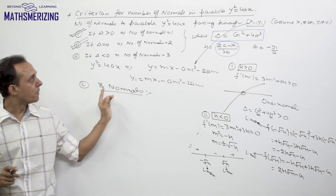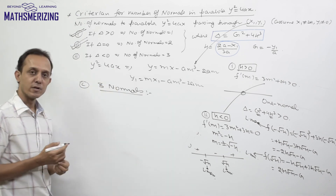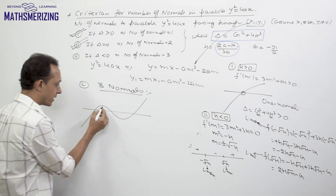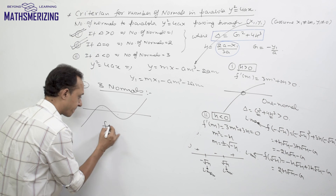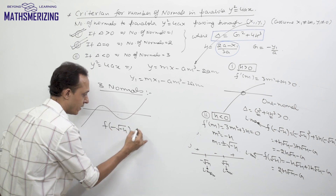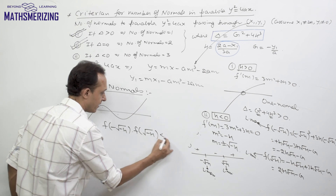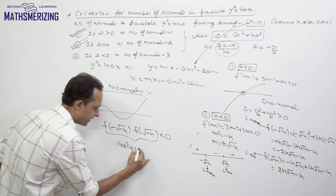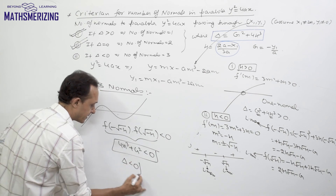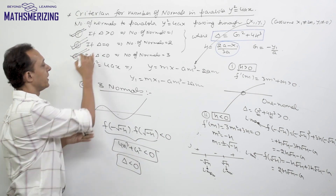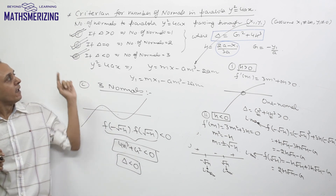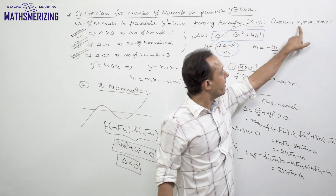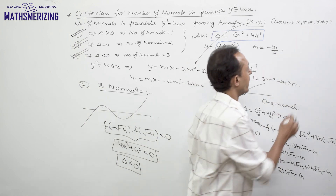For three normals, the cubic must have three distinct real roots. This requires the local maximum to be positive and the local minimum to be negative, so f(−√(−h)) · f(+√(−h)) < 0. This gives 4h³ + g² < 0, meaning delta < 0. So when delta is less than 0, there are three normals. This completes the proof of the general formula for the number of normals to the parabola y² = 4ax through a general point (x₁, y₁).